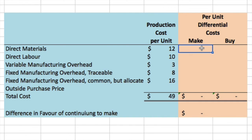One thing to note that I didn't put on the screen: under fixed manufacturing overhead traceable, we have $8. We are told that 25% of that, or $2, represents supervisory salaries. The other 75% represents depreciation of special equipment that has no resale value, so $6 of that $8 is a cost we cannot avoid.